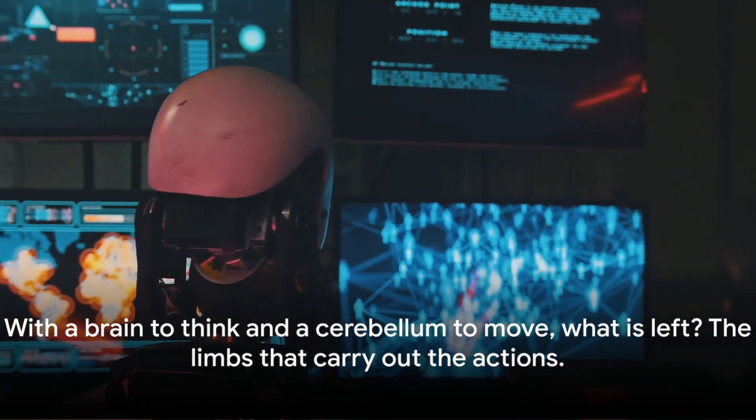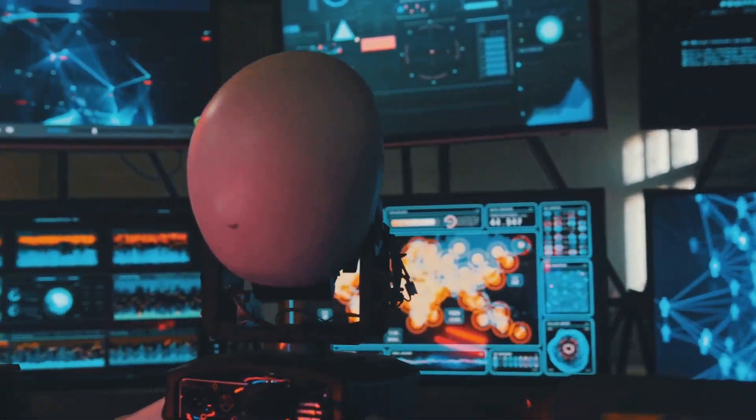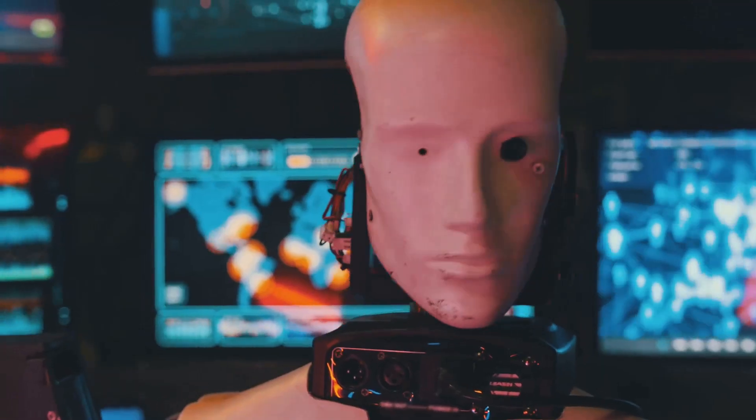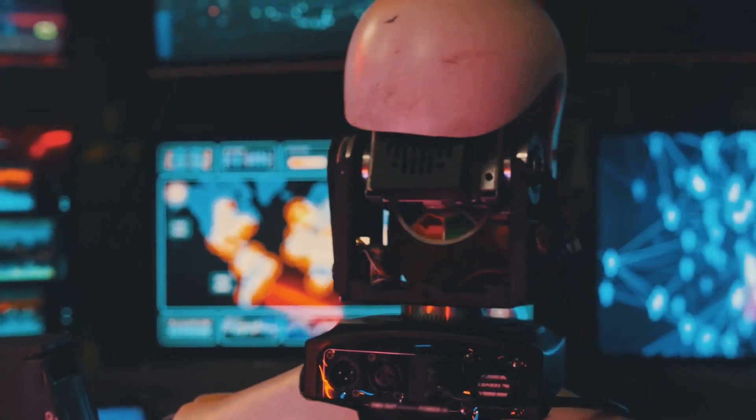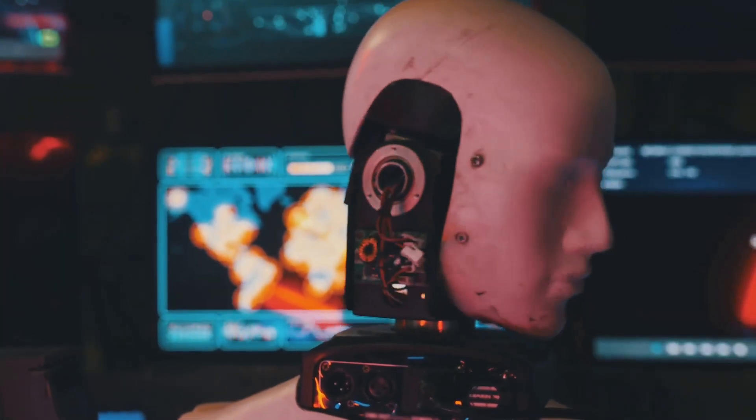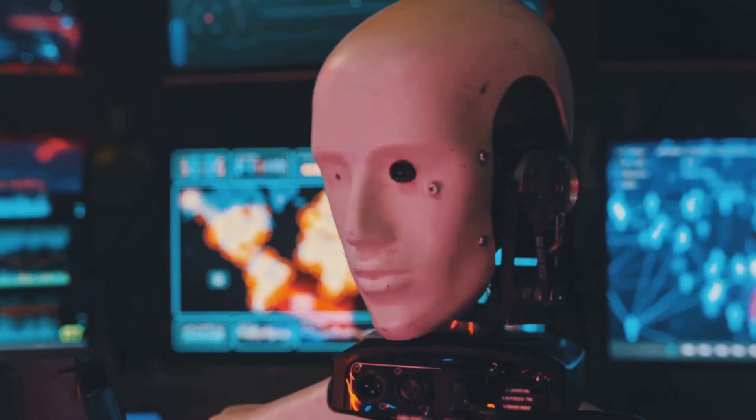With a brain to think and a cerebellum to move, what is left? The limbs that carry out the actions. In the next scene, we'll explore the remarkable technology behind these limbs and how they're bringing us one step closer to the future of humanoid robots.